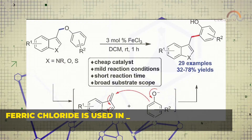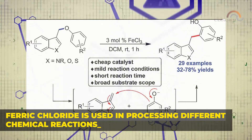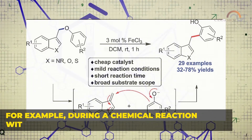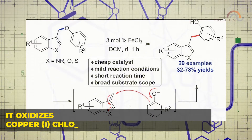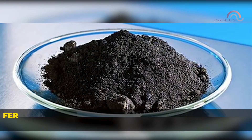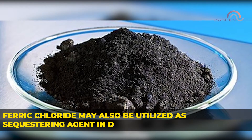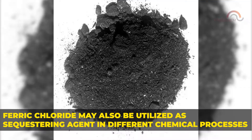Ferric chloride is used in processing different chemical reactions. For example, during a chemical reaction with copper chloride, it oxidizes copper(I) chloride to copper(II) chloride. Ferric chloride may also be utilized as a sequestering agent in different chemical processes.